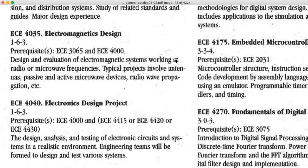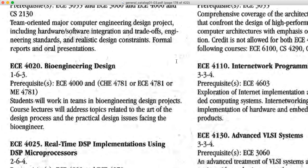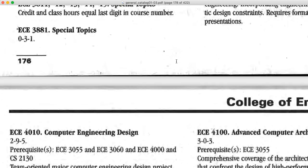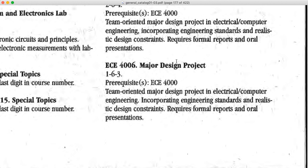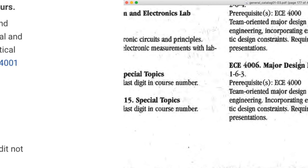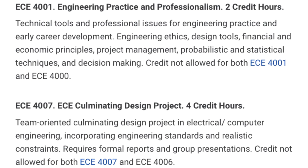There was also concern about maintaining consistent standards in terms of deliverables and how they were judged between all of these different sections. The idea was that if you had a single design course like 4006 — which was later called 4007 — it would be easier to maintain some consistency. There were some minor tweaks made to the details of 4006, it turned into 4007, the unified senior design experience.